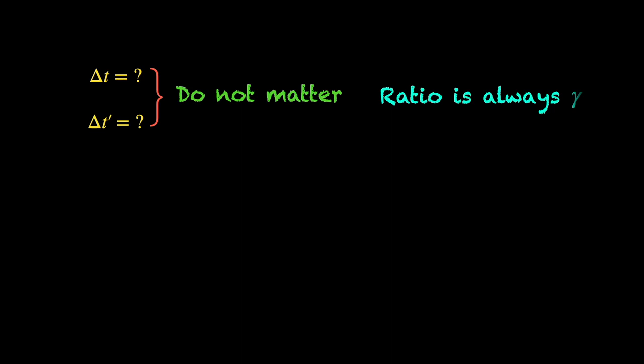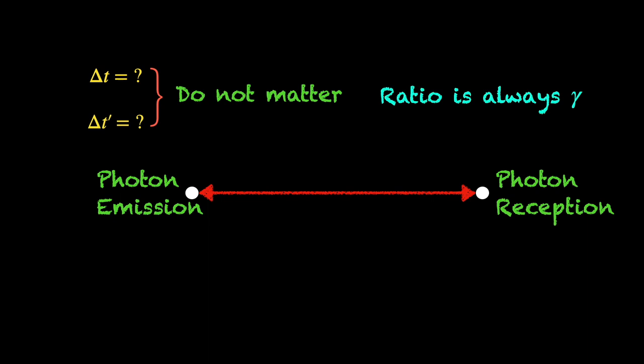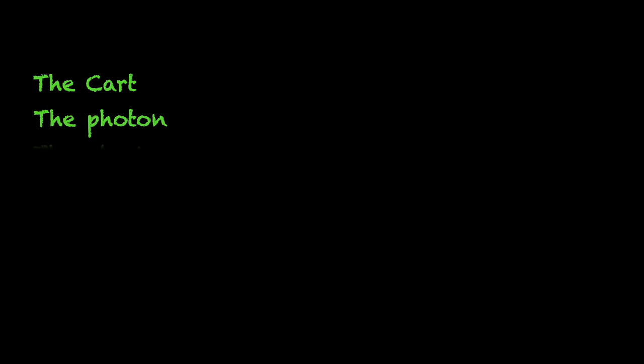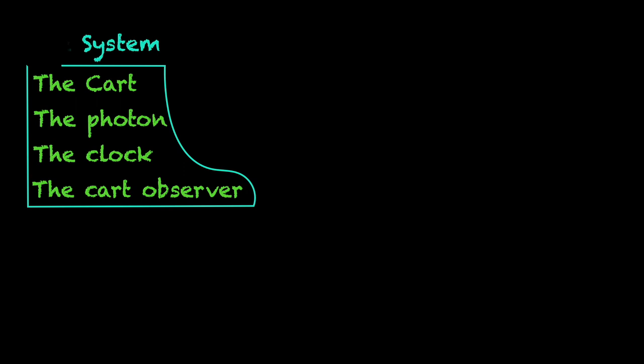In fact, the emission and reception of the photon had no great role to play either. They just happened to be the two reference events we considered. Honestly, some other pair of events, for example, two consecutive claps by the cart observer while he stood rooted to his pot within the moving cart, would have done the job. In our photon clock example, the moving cart, the photon, the clock inside the cart, even the observer on board, all are part of the system that is being observed and analyzed by the ground observers.